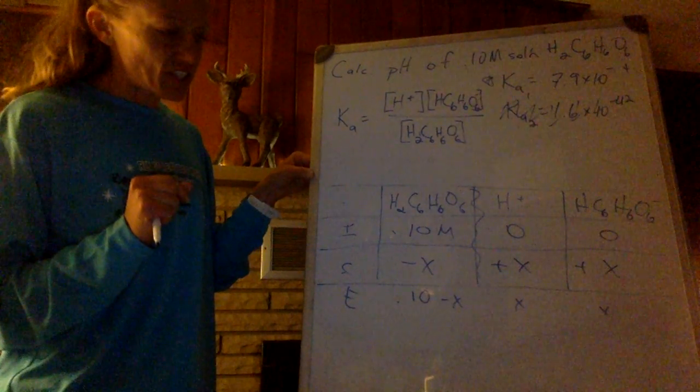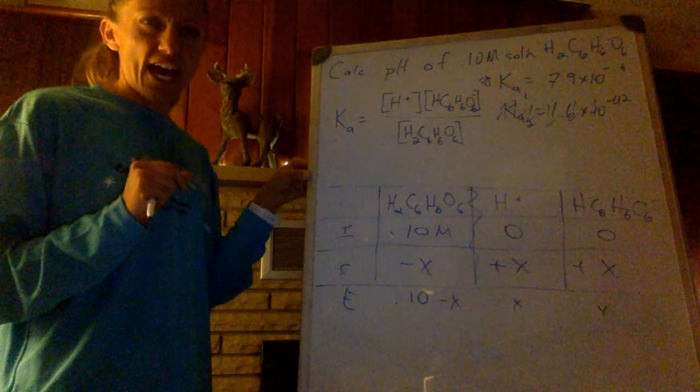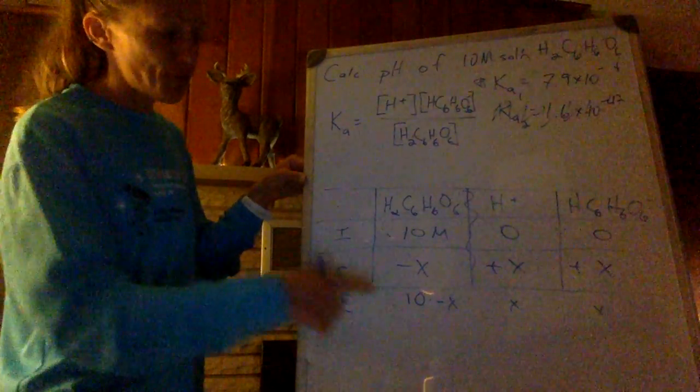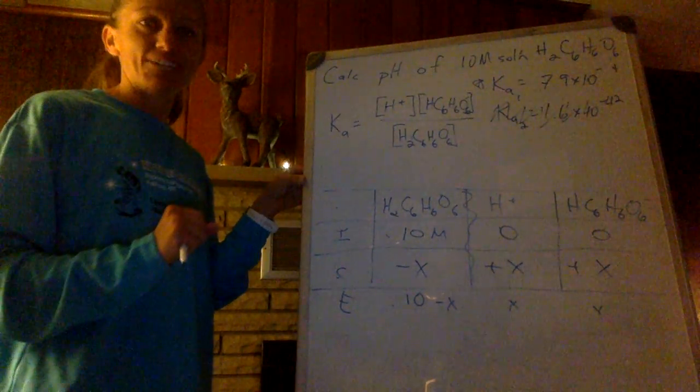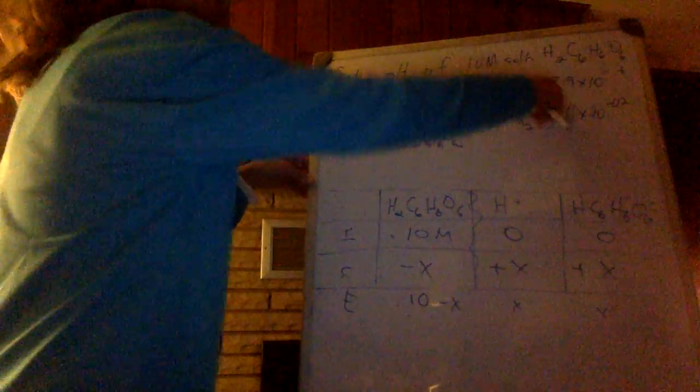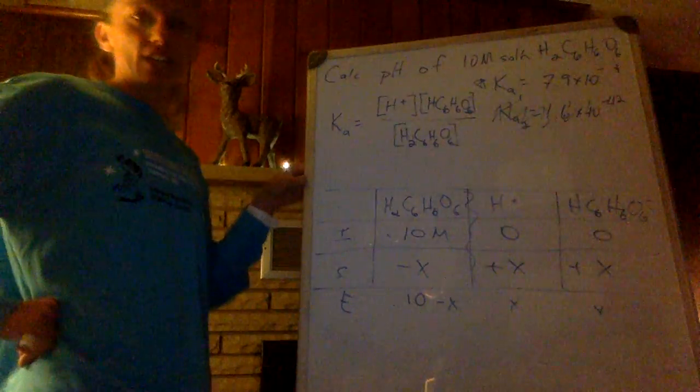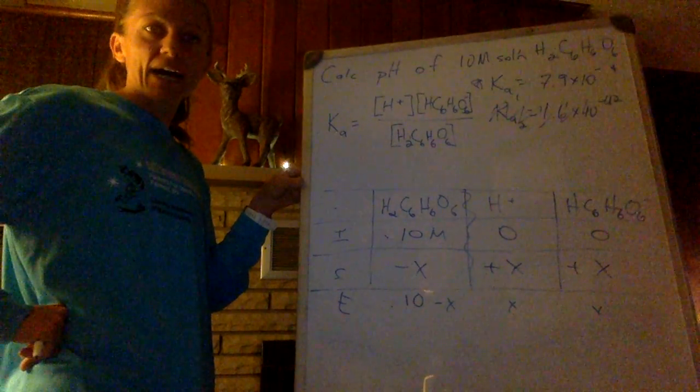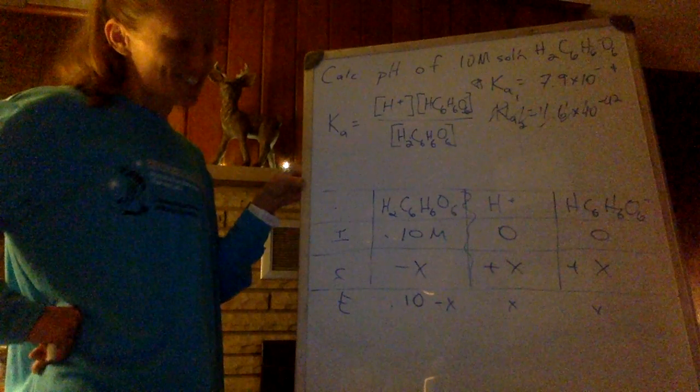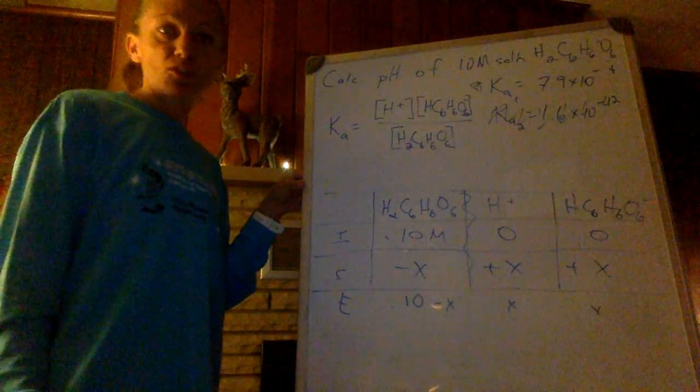There's another rule that says if Ka is less than 100 times, or sorry, if your concentration is less than 100 times Ka, you can ignore it too. So if I enter this in a calculator, I get 7.9 times 10 to the negative 2 if I multiply it by 100. That's 0.079, and that's still less than that, so I can ignore it.